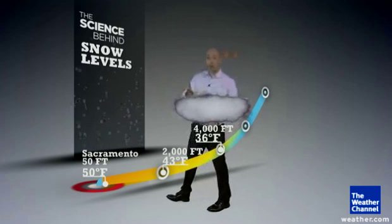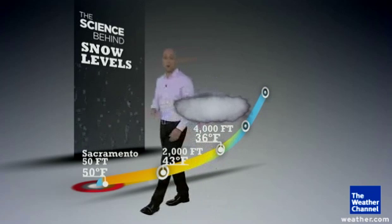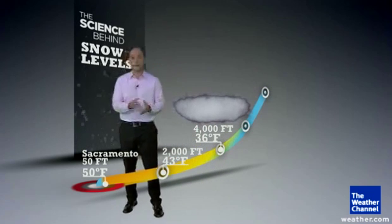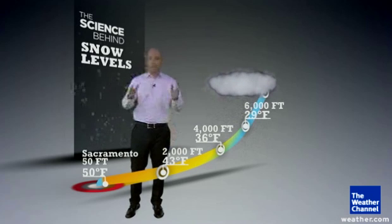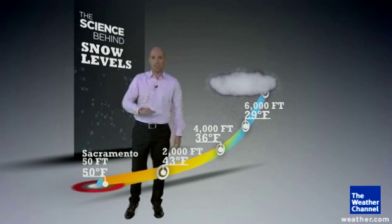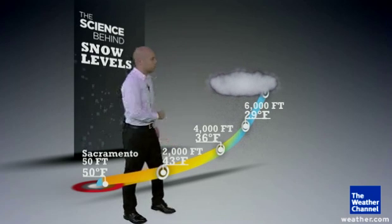What could be close to the snow level, right? 32 degrees — the freezing line. That's generally the rule, but anywhere around there you can start to see some snow.